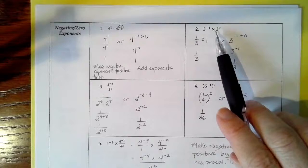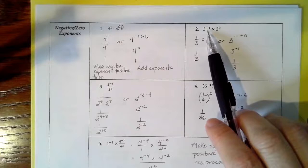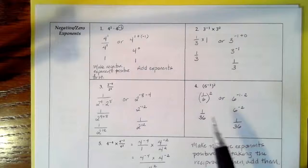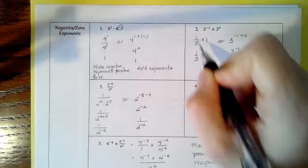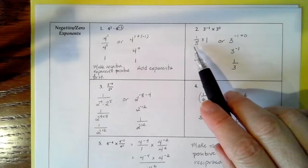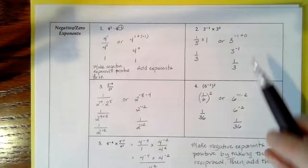Let's look at this example. This is just a different way of writing a multiplication sign. So you have 3 to the negative 1 times 3 to the 0. The first thing we could do is go ahead and use our exponent rules. 3 to the negative 1 is really 1 over 3. Remember, you take the reciprocal to make your exponent positive, and 3 to the 0 is going to be 1. So it's 1 over 3 times 1, which is simply 1 third.